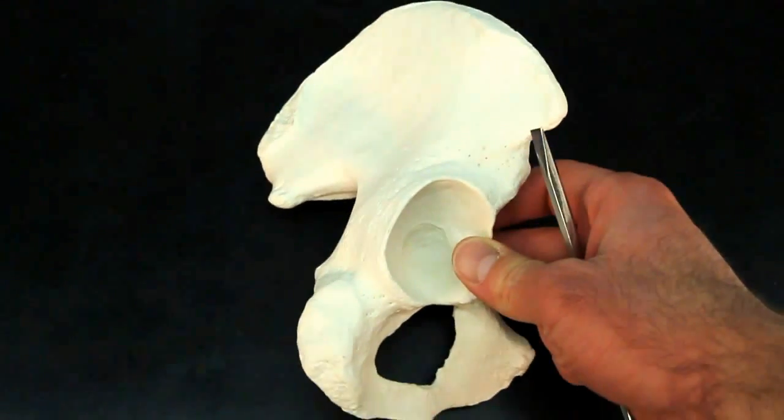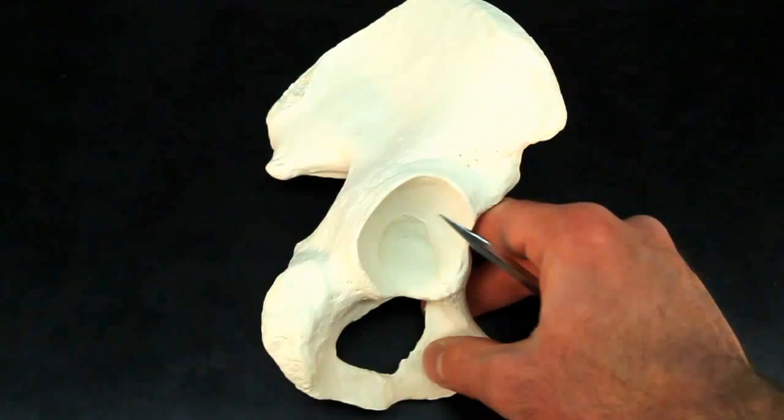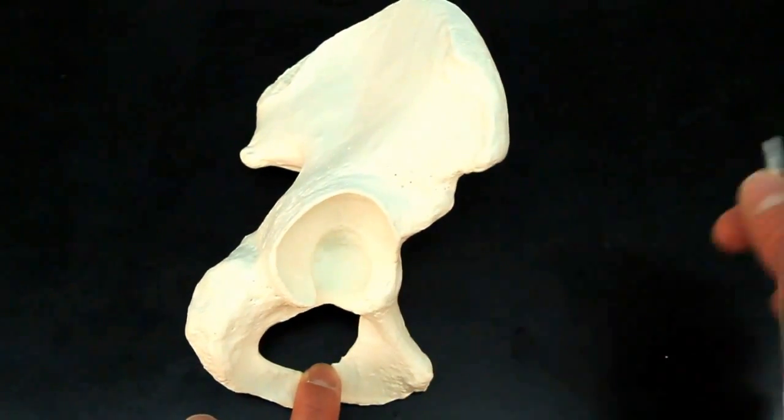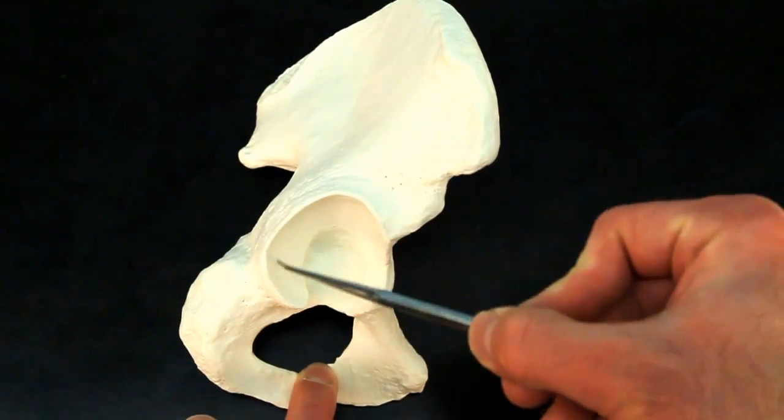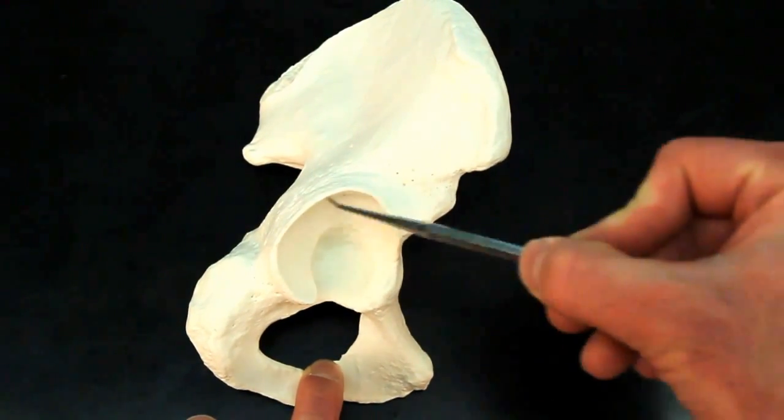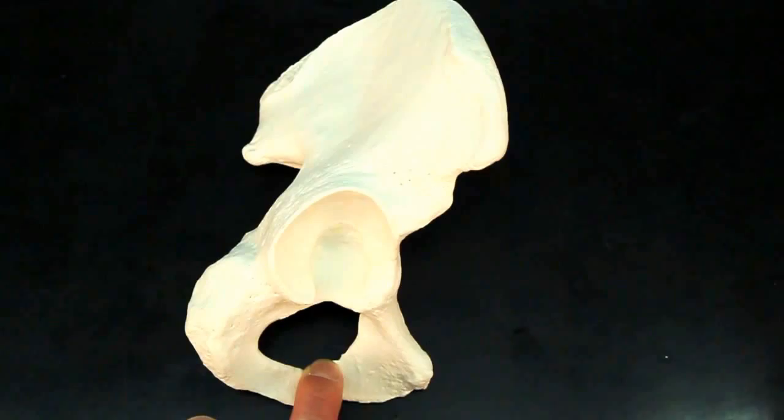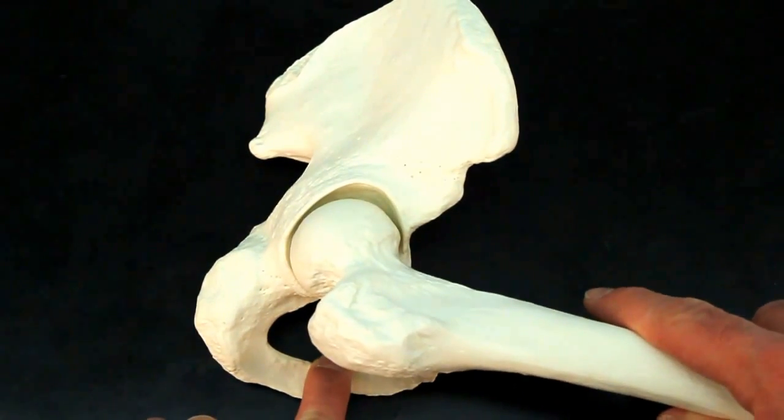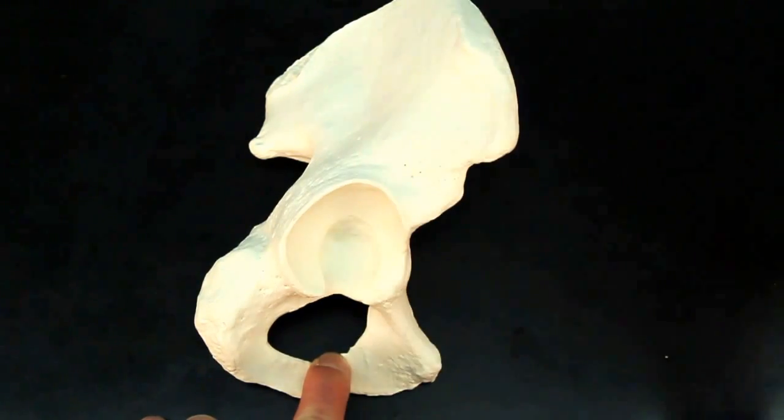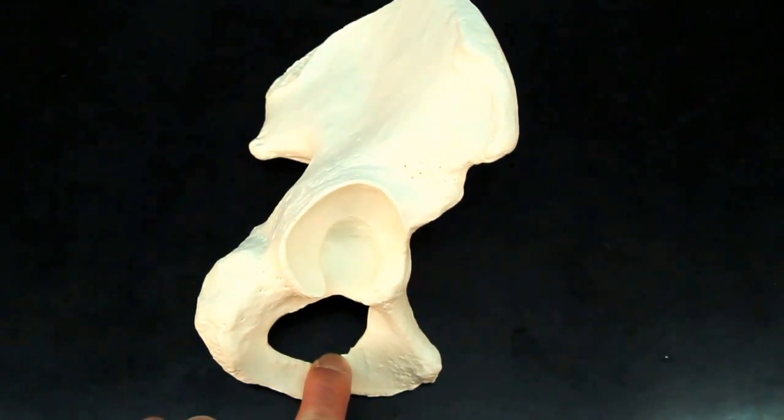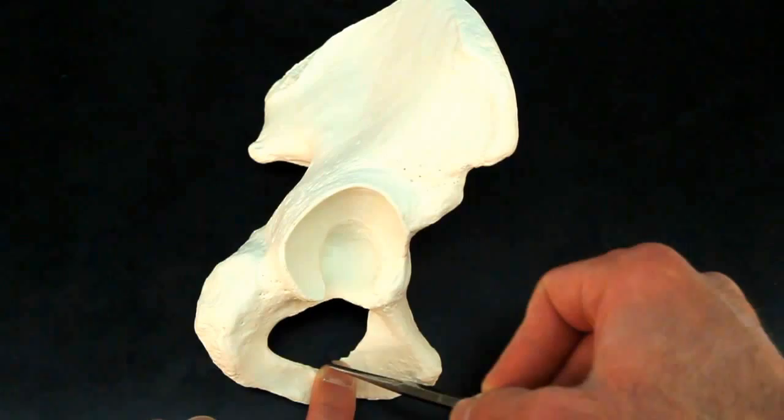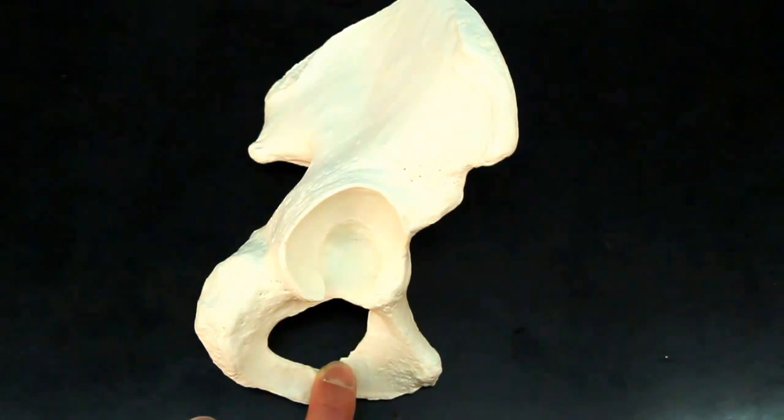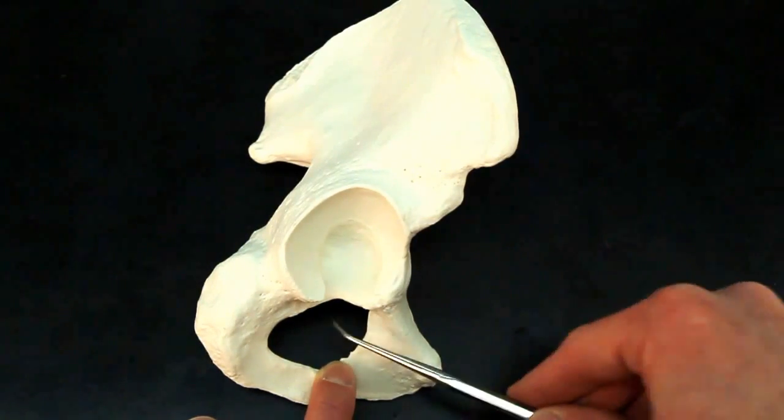Switching back to the individual coxal bone, you're going to have the acetabulum. Now this entire opening is the acetabulum. The acetabulum is going to form your hip joint. It's where the femur will articulate, the head of the femur. And we only have one opening or one hole down here. This hole is known as the obturator foramen.